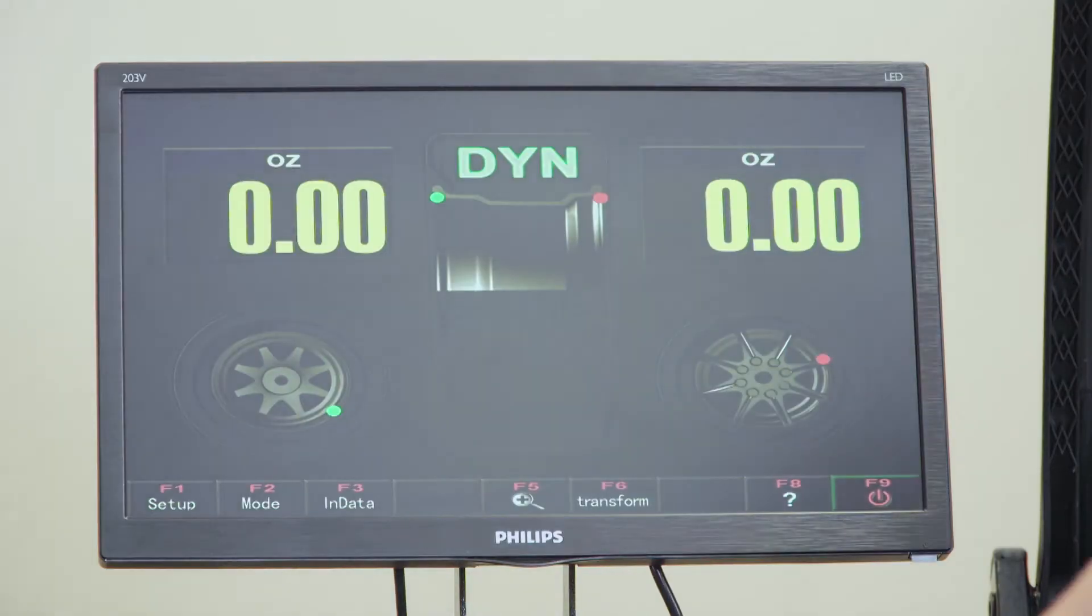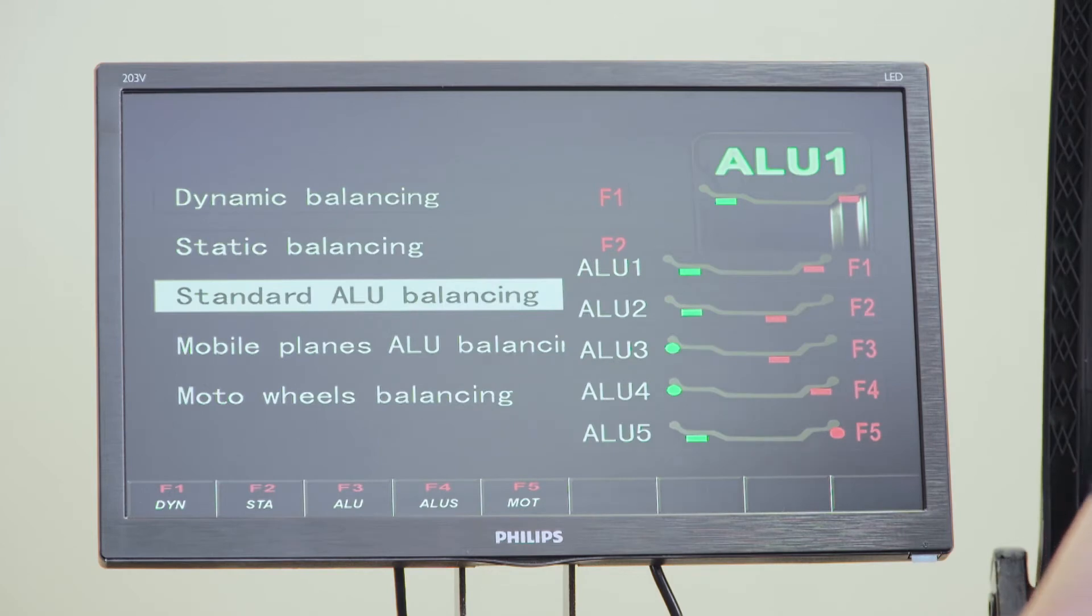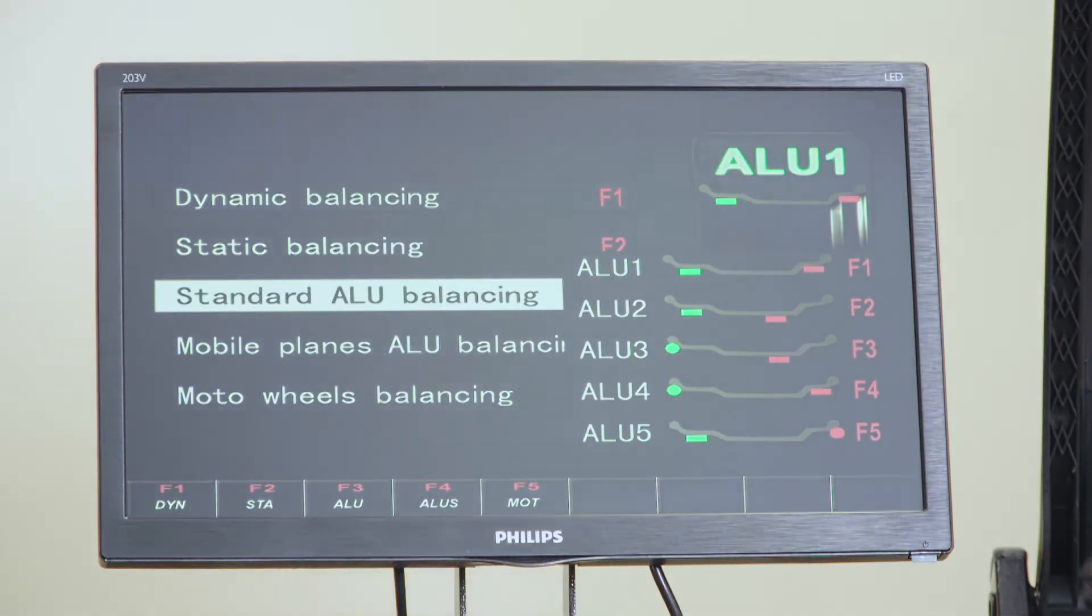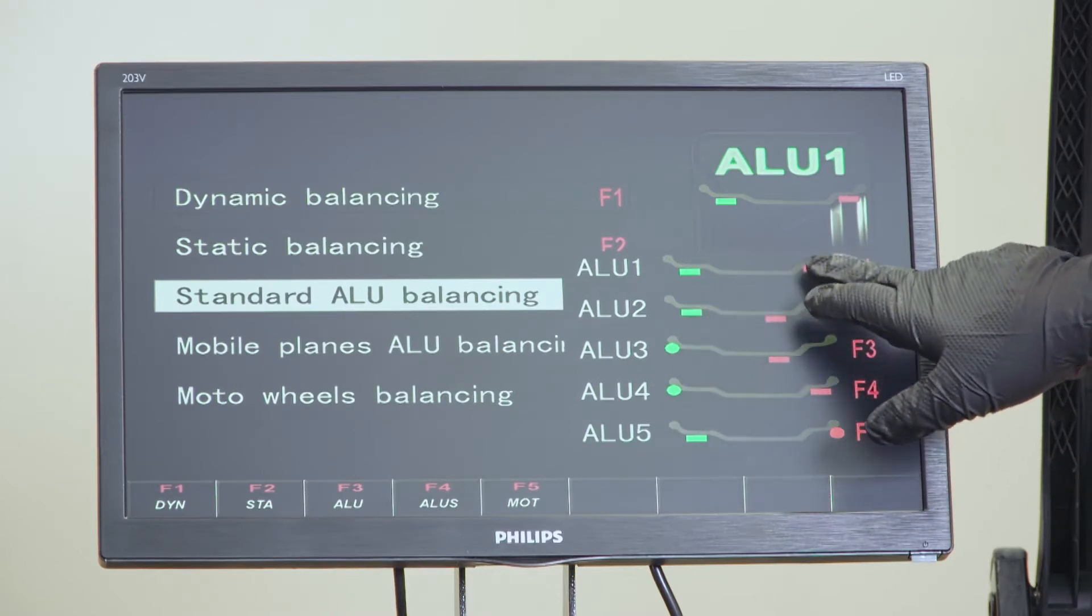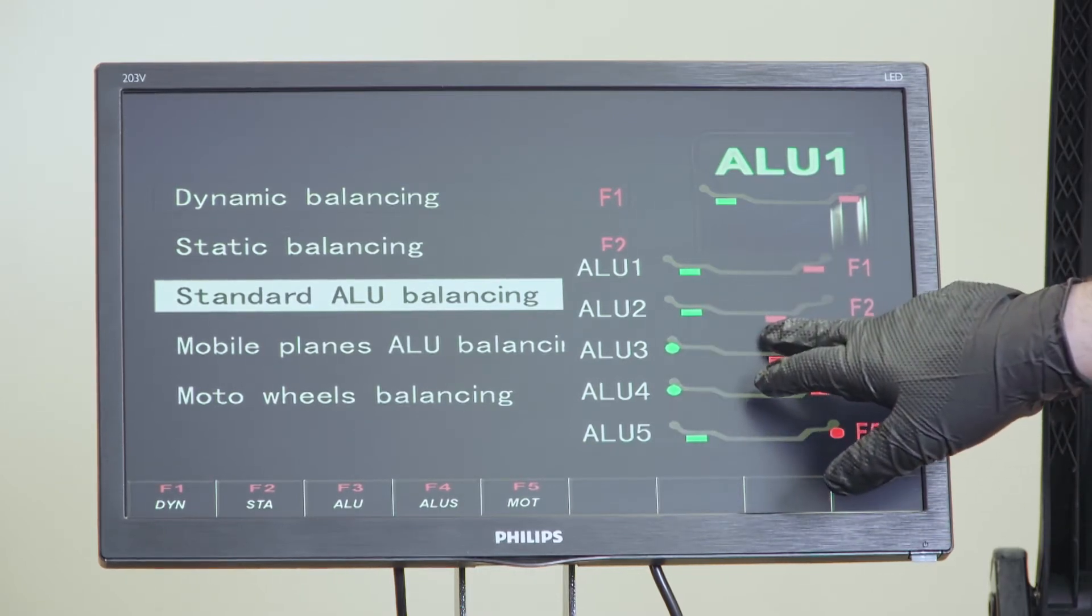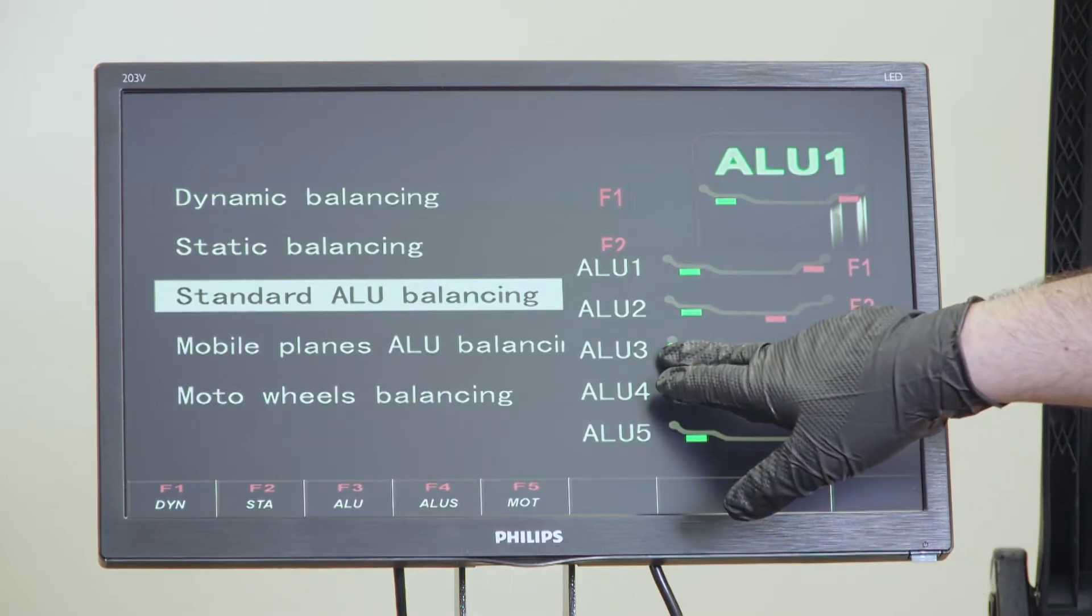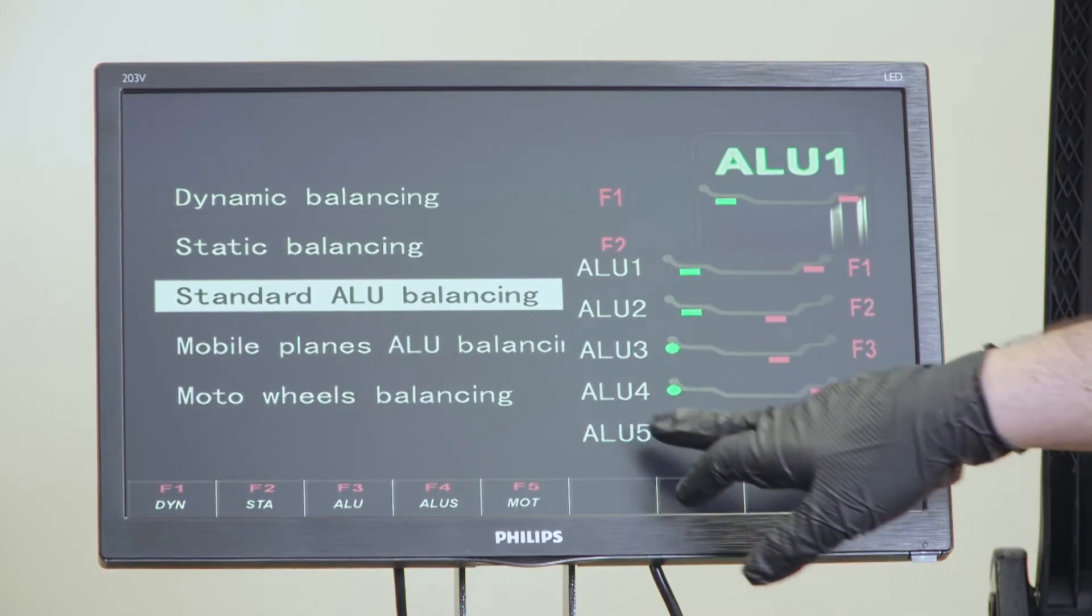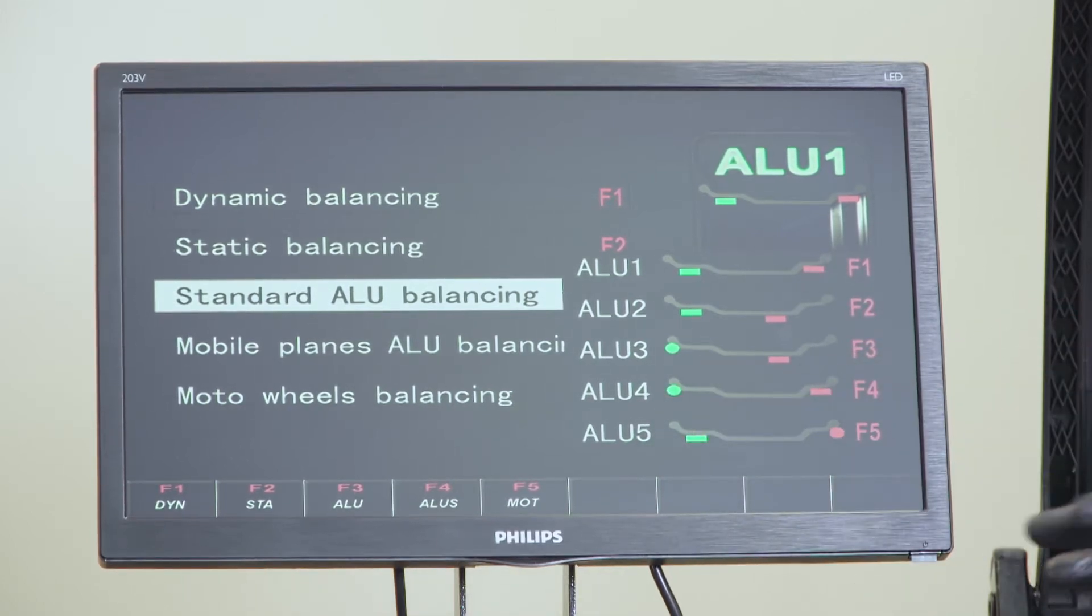We did the dynamic. Now we're going to show you the different aluminum modes. F1 is stick and stick. F2 is also stick and stick, Aluminum 2. Aluminum 3 is clip on the inside and stick on the outside. Aluminum 4 is clip on the inside and stick on the outside.